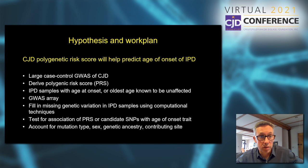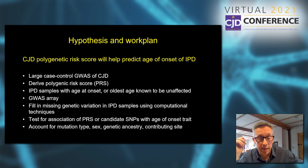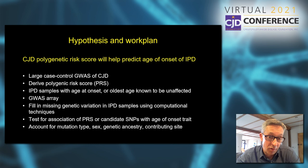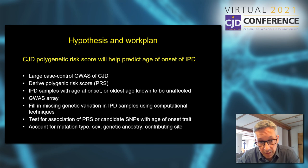We have a large case-control study of sporadic CJD, giving us information about the overall genetic risk for sporadic CJD from which we can derive polygenic risk scores. If we then acquire inherited prion disease samples associated with an age of onset, we can run genome-wide arrays to determine hundreds of thousands of common genetic variations, fill in missing genetic variation using computational techniques, and test whether this polygenic risk score or individual candidate genetic variations can alter the age at which illness starts. We'll account for the particular mutation, the sex of individuals, their genetic ancestry, and the contributing site, using established techniques.